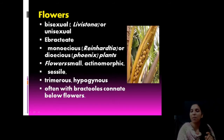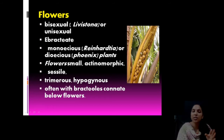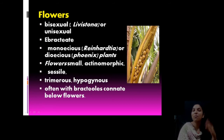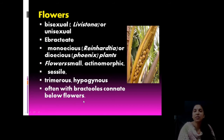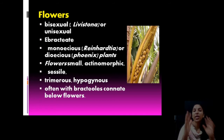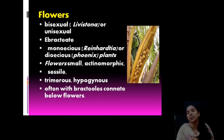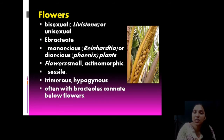About the flowers — flowers can be bisexual or unisexual. Usually in coconut they are unisexual. They are ebractate — bracts are absent. Monoecious means male and female on a single plant, which is very common. Dioecious also occurs; Phoenix plant is dioecious. Flowers are small, actinomorphic, and sessile. They are trimerous — 3+3 condition. Hypogynous means ovary is superior. Bracteoles are present below the flowers, but bracts are absent.